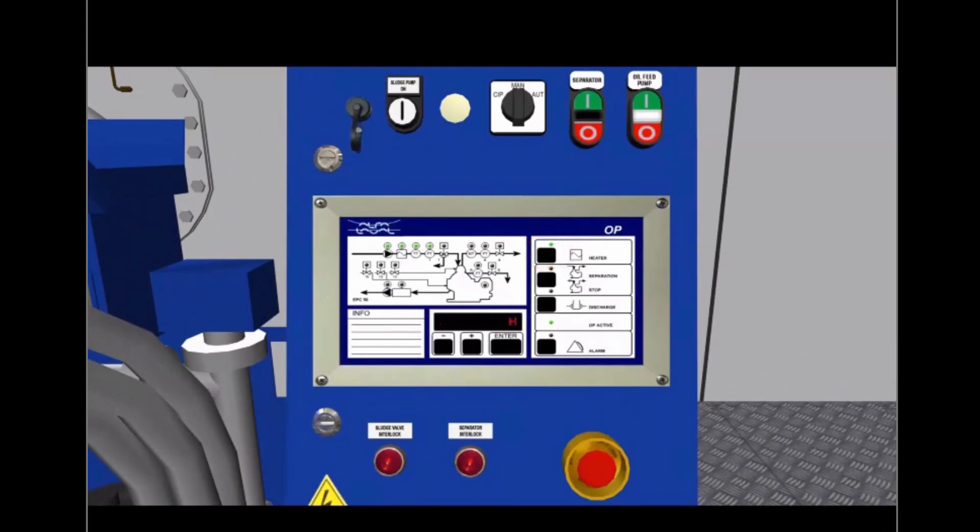Press the separation button to start the separation process. Before the separator can be started, a number of questions have to be answered. If no work has been carried out on the bowl, press the minus button. No calibration of the system is then required, and the start sequence begins.